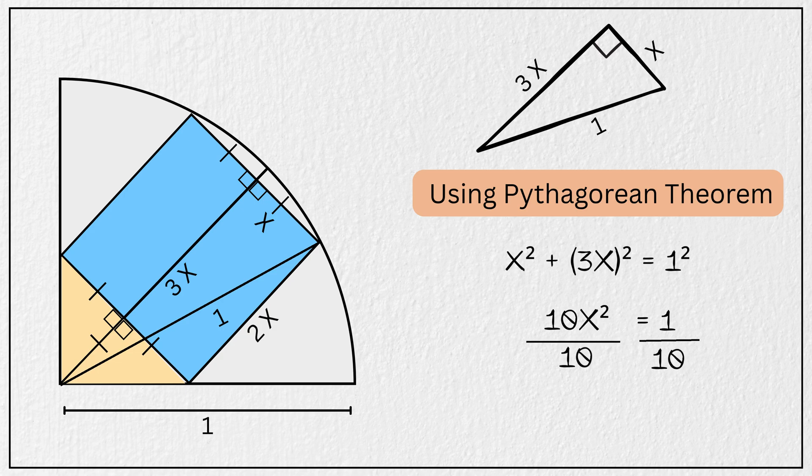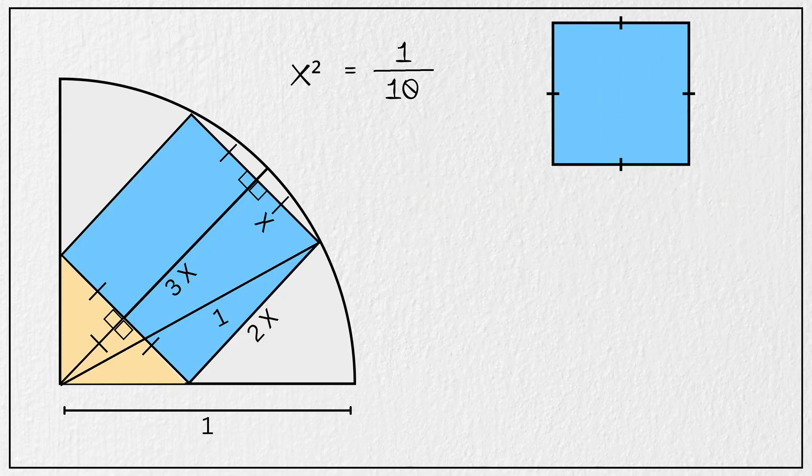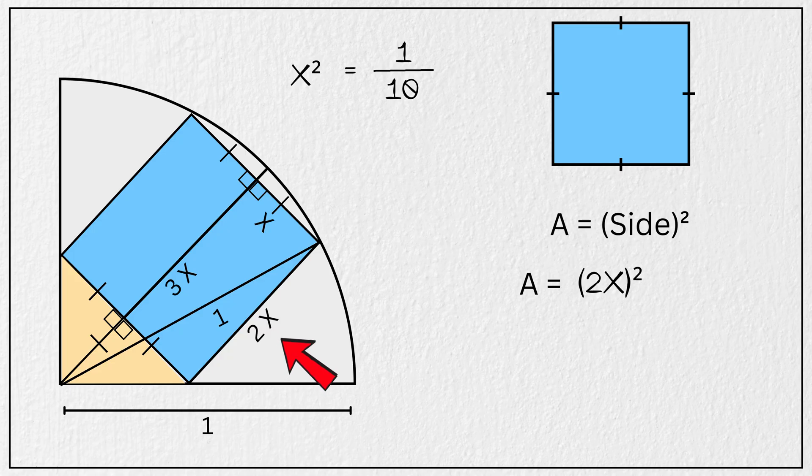And we get x squared equals 1 divided by 10. The area of a square is calculated by squaring its side. Since the side of our square is 2x, its area becomes 2x squared, which is 4x squared.